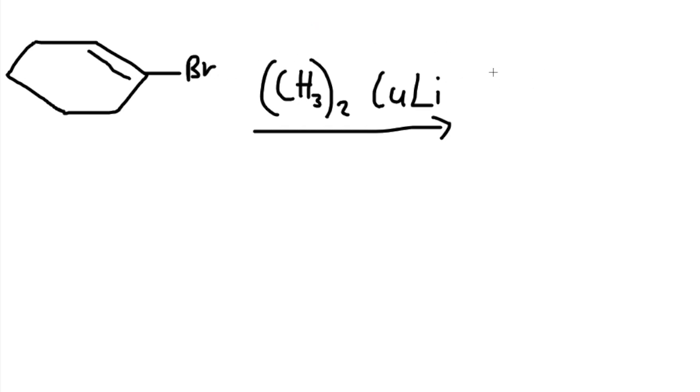So literally, all we do is redraw the structure, add the methyl, and remove the bromine. That's it.